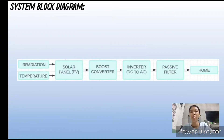The block diagram of the project shows that the solar panel PV output is DC and is depending on the temperature and irradiation rate it takes. The maximum power for the solar panel is only in the afternoon, and the low power is in the morning, evening, and cloudy days.